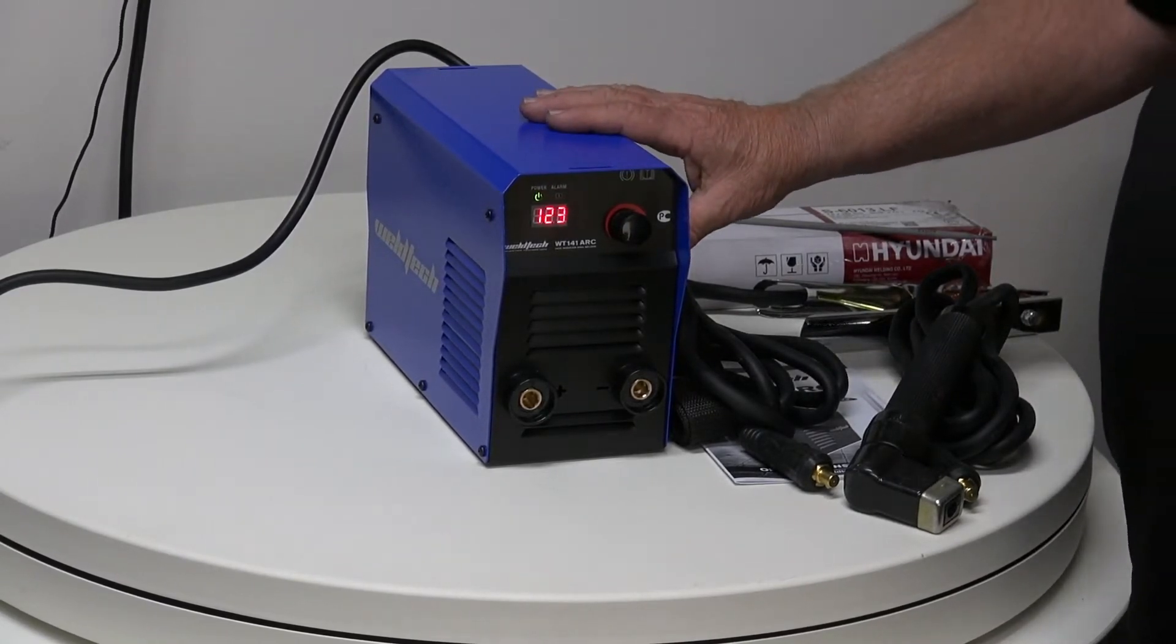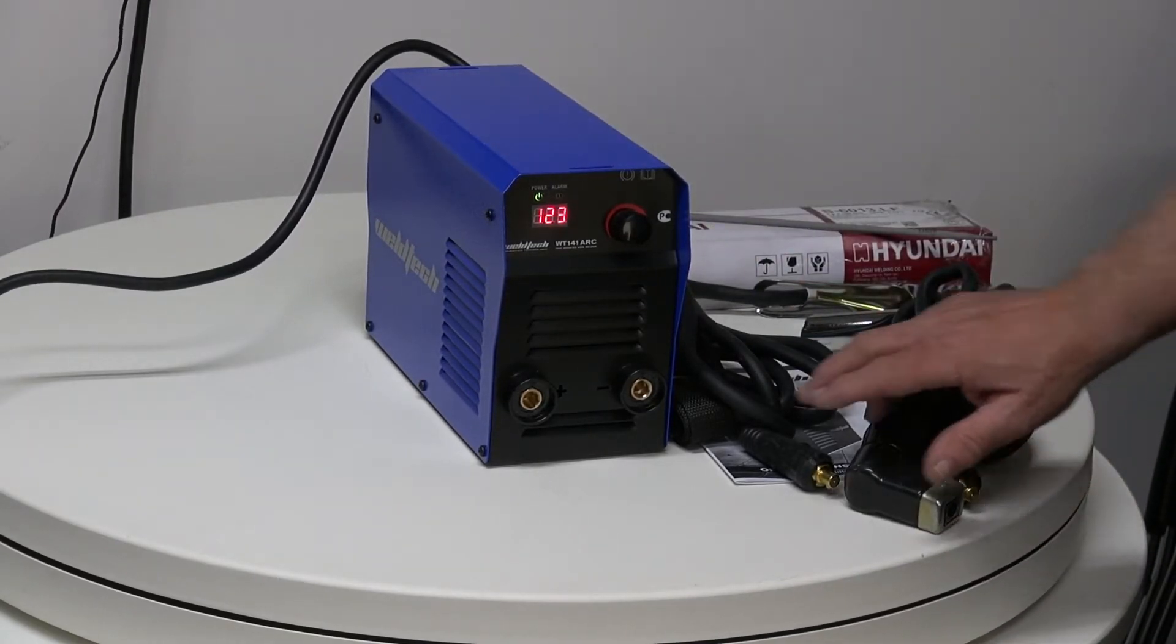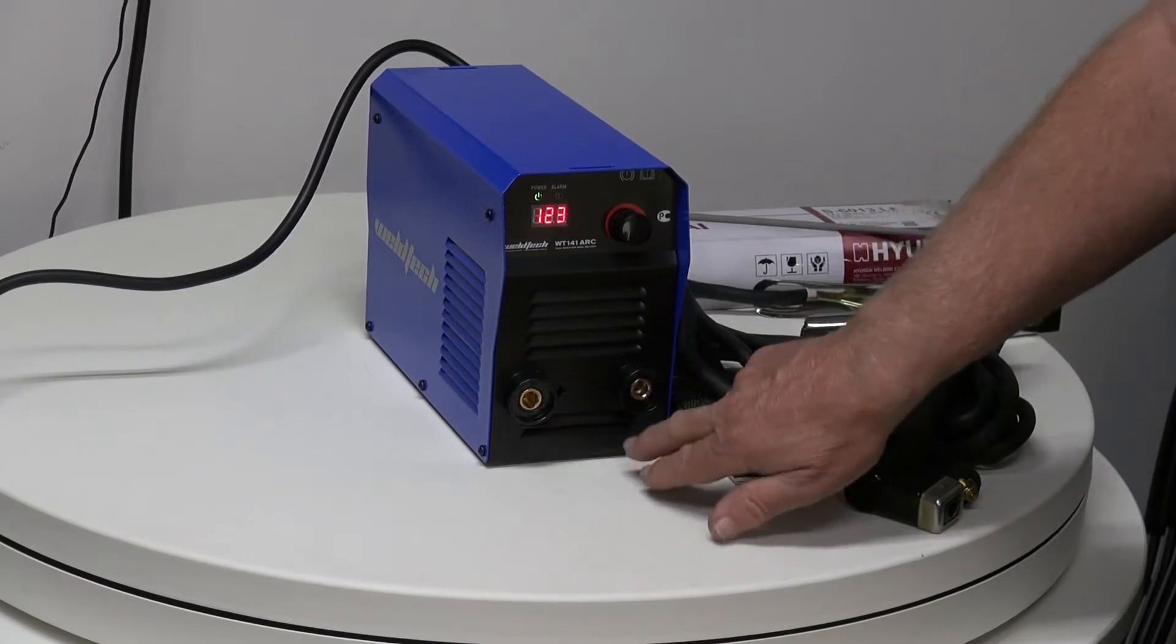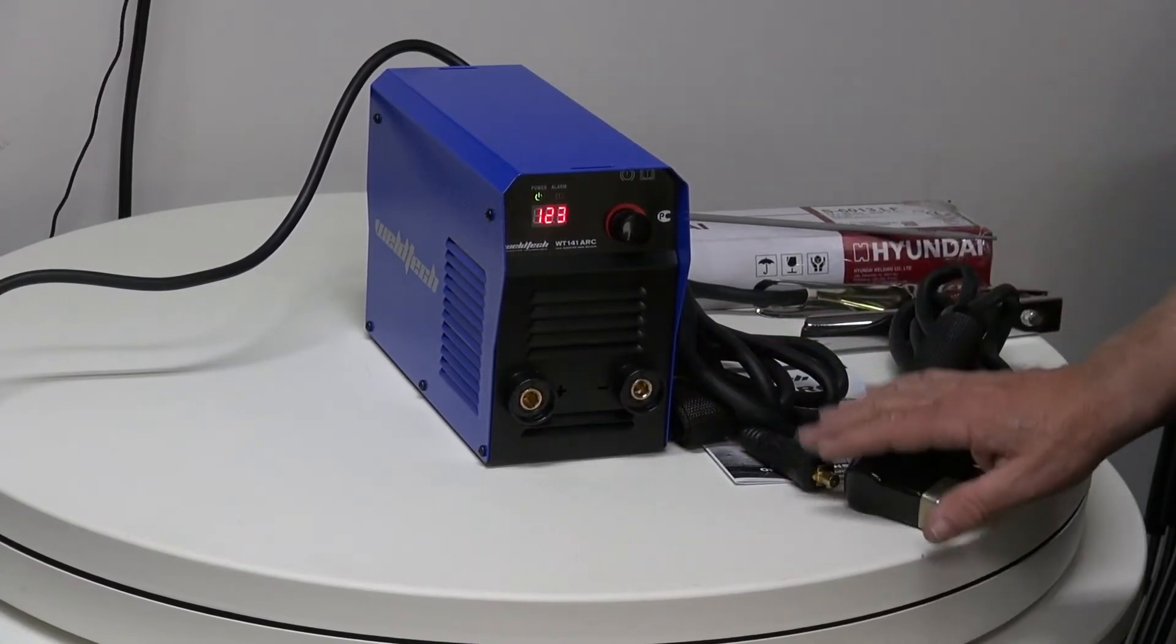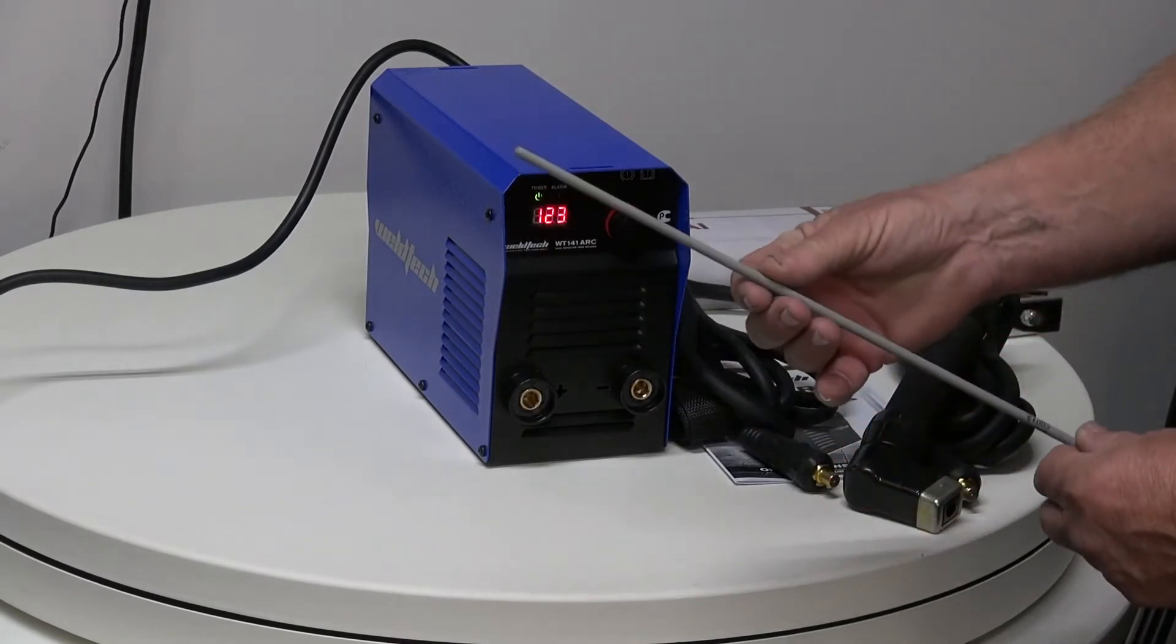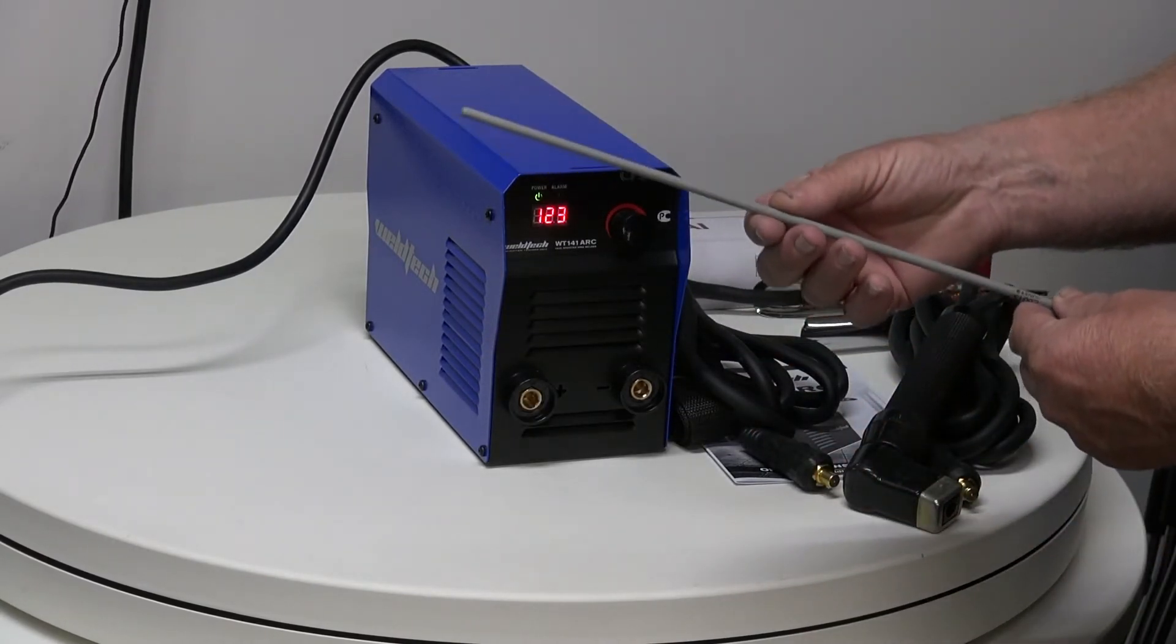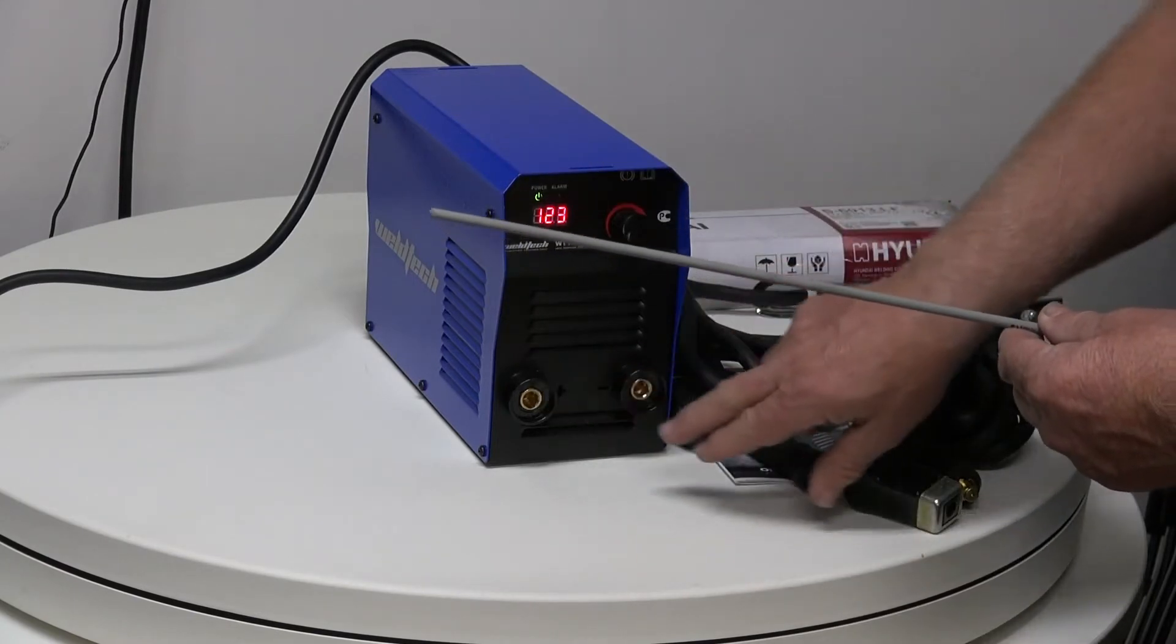Now because the 141 WeldTech arc welder is a DC welder, we have these little symbols on the bottom here. One called positive and one called negative. That's very important because when we have an electrode like this we need to know which way around it goes. It's very important for the running of the electrode that we put it into the right place.